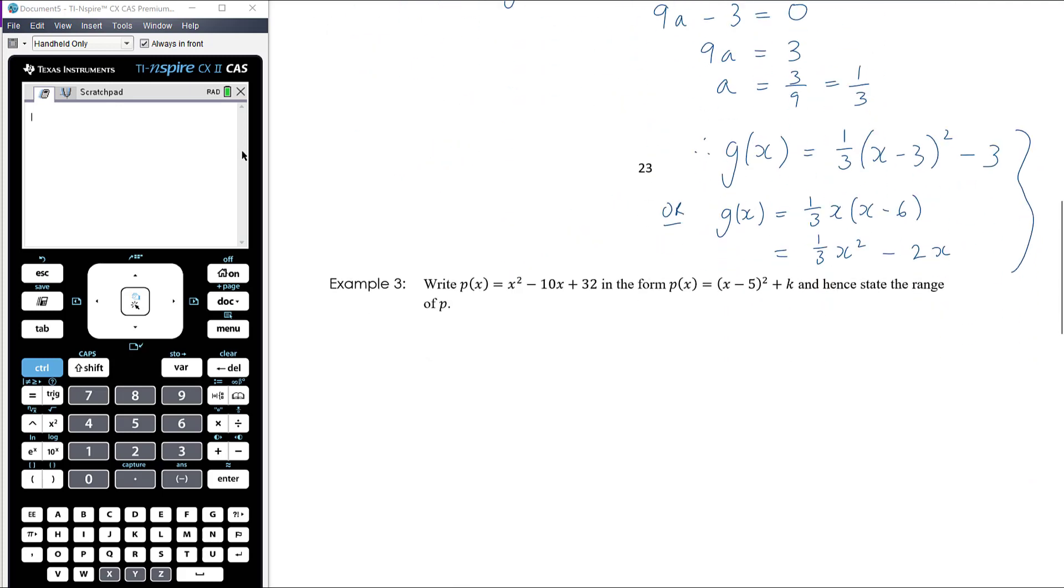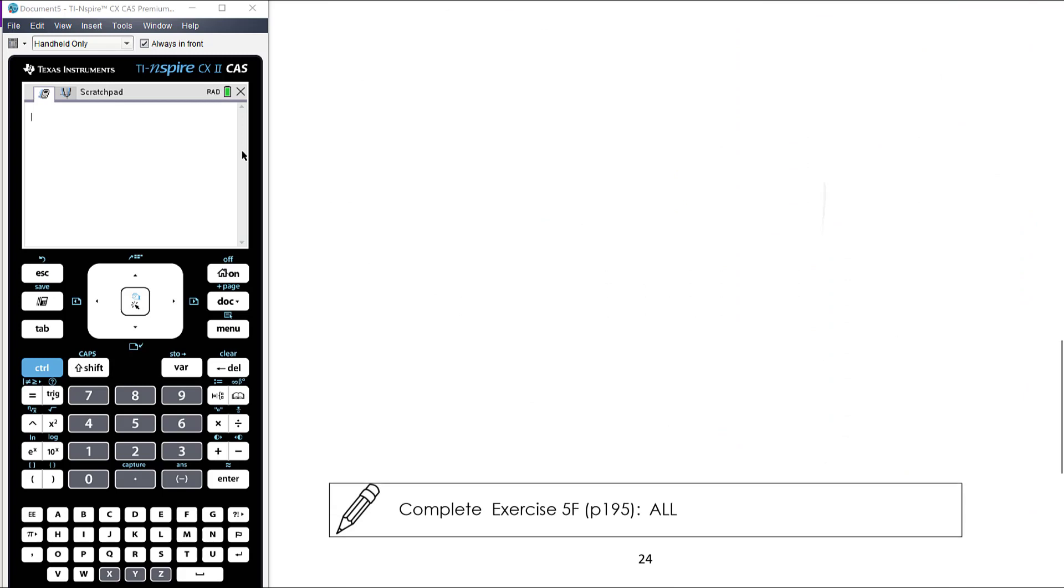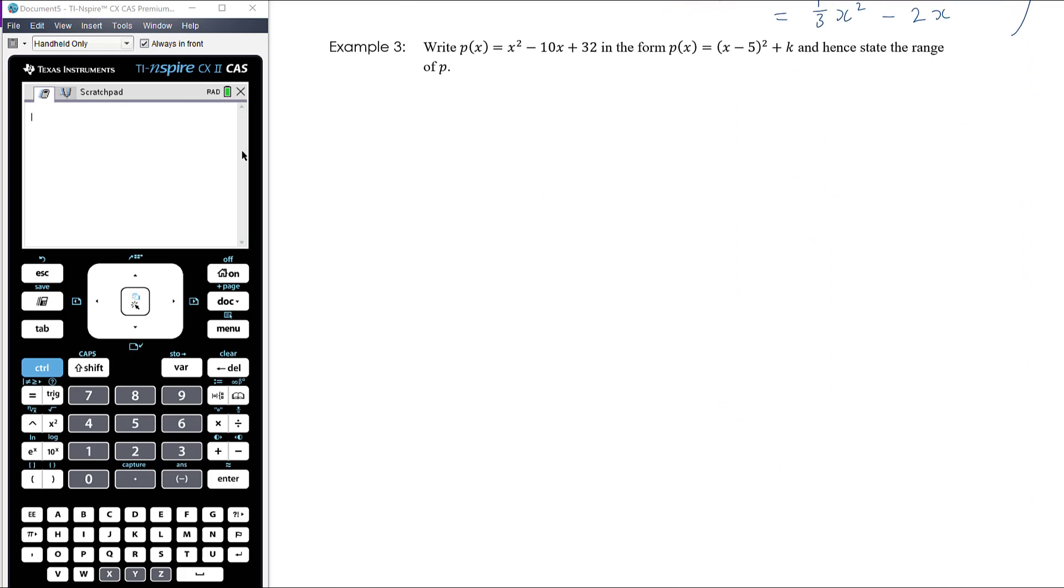Let's have a look at the third and I think final, yes, final example. Write p(x), which is x² - 10x + 32, in the form p(x) equals (x - 5)² + k, and hence state the range of p. So we know that to get this quadratic function from this form to this form, that happens by completing the square.